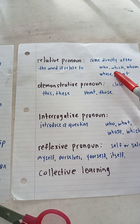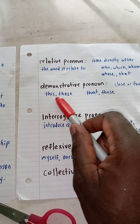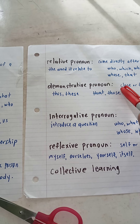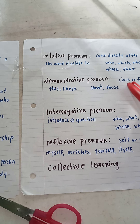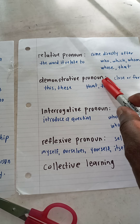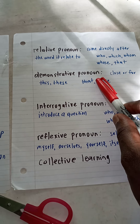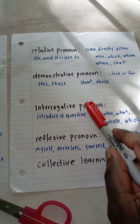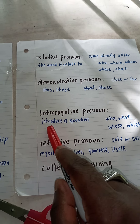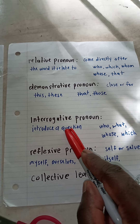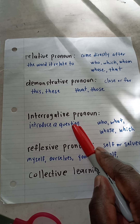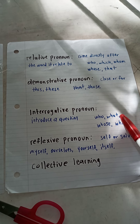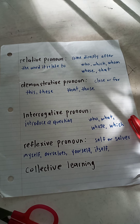So this and these are used when something is close to you. If you say that and those, it's like you're pointing away — that and those over there refer to something that is far away.